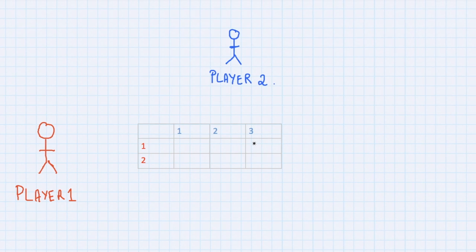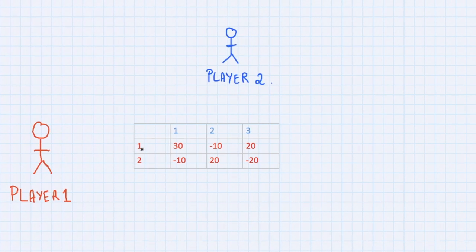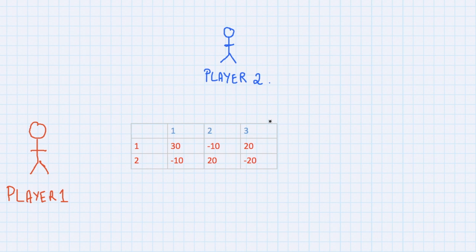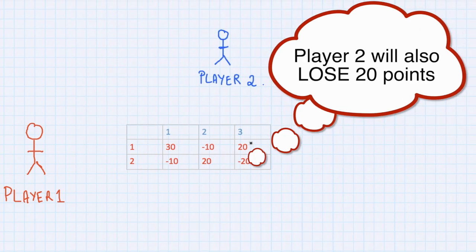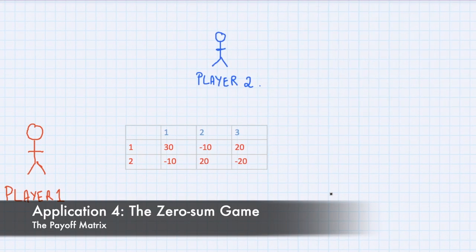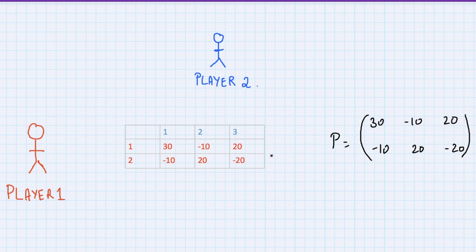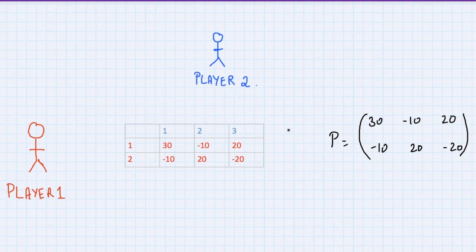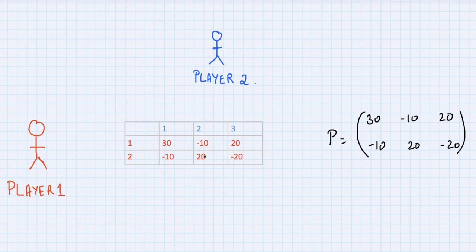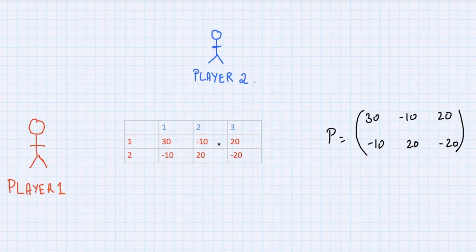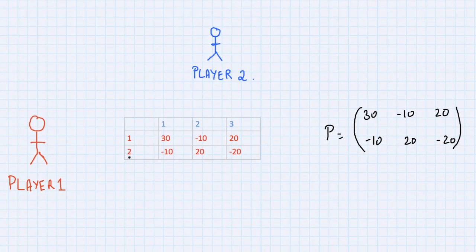Let's fill in some random values. If player one moves move one and player two moves move three, then player one gains 20 points. This matrix is usually referred to as the payoff matrix for the game. The goal of player one is to maximize the expected payoff, whereas player two's goal is to minimize the expected payoff.